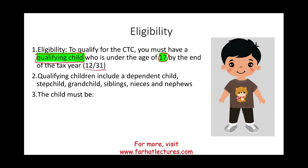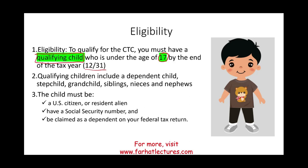The child must also be a U.S. citizen or a resident alien, have a social security number, and must be claimed as a dependent on your federal income tax return. If you don't know the dependency rules and the qualifying child definition, make sure you view those related lectures — but that's all you need to know for eligibility.